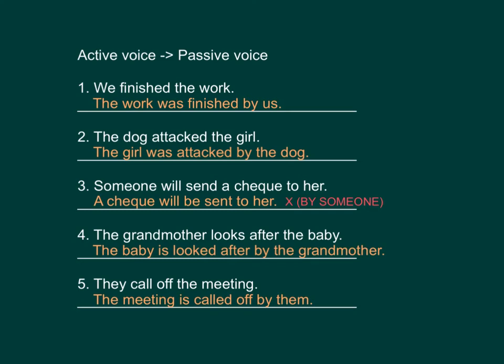Number four: the grandmother looks after the baby — the passive voice: the baby is looked after by the grandmother. Number five: they call off the meeting — the passive voice: the meeting is called off by them. This is the end of your lesson. See you.